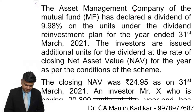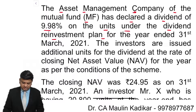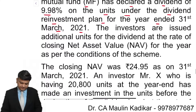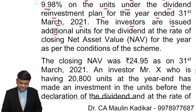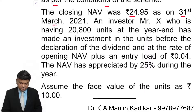The asset management company of the mutual fund has declared a dividend of 9.98% on the units under the dividend reinvestment plan for the year ended 31st of March 2021. The investors are issued additional units for the dividend at the rate of the closing NAV for the year as per the conditions of the scheme. The closing NAV was ₹24.95 as on 31st of March 2021.